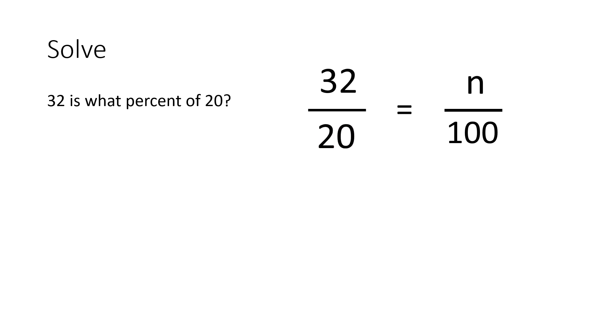And now we can solve this by multiplying proportionally. First, we always multiply diagonally wherever we see numbers. In this case, we can multiply diagonally 32 times 100. We cannot multiply 20 times n. We only multiply wherever we have numbers. So, let's multiply.